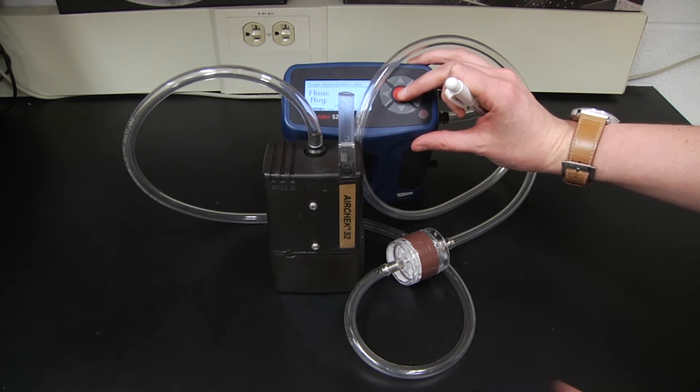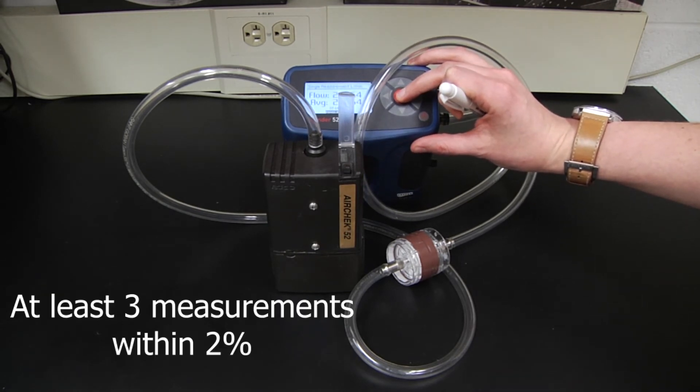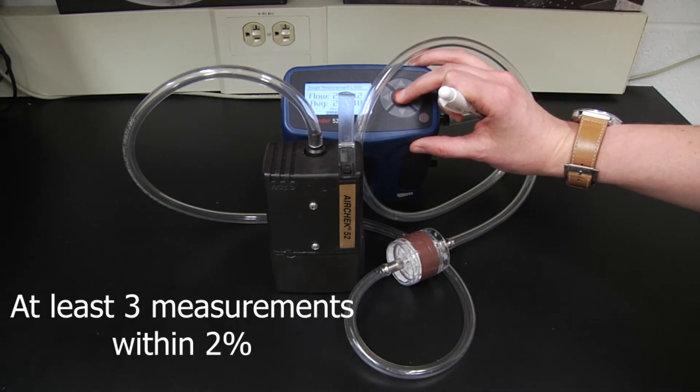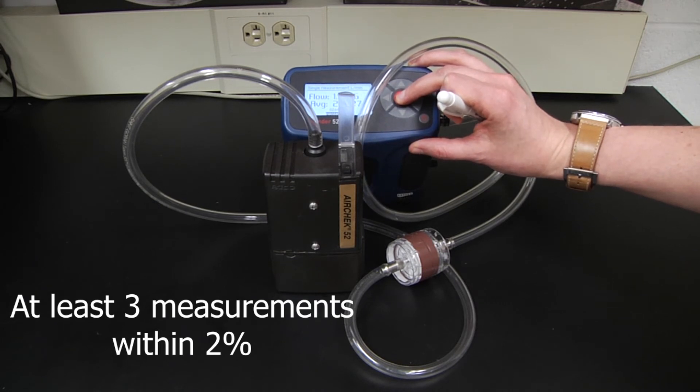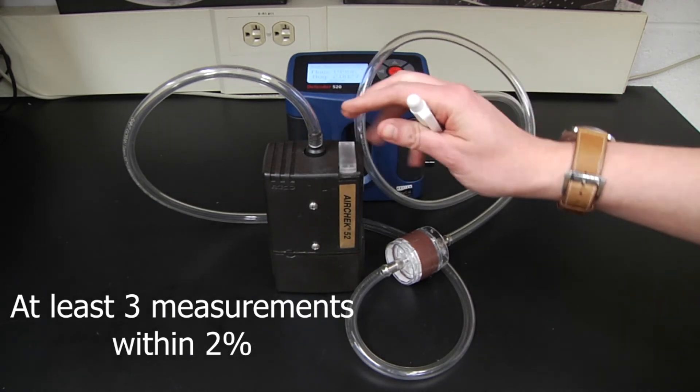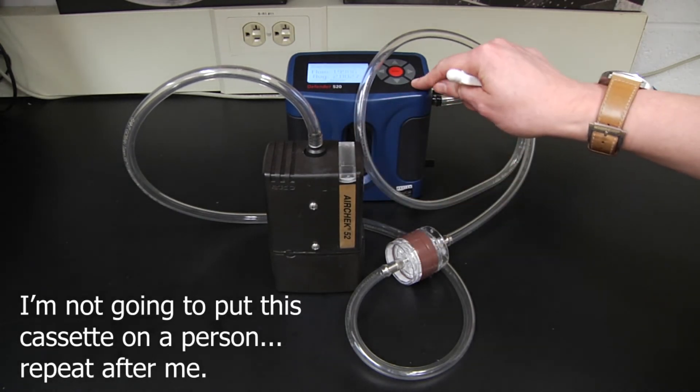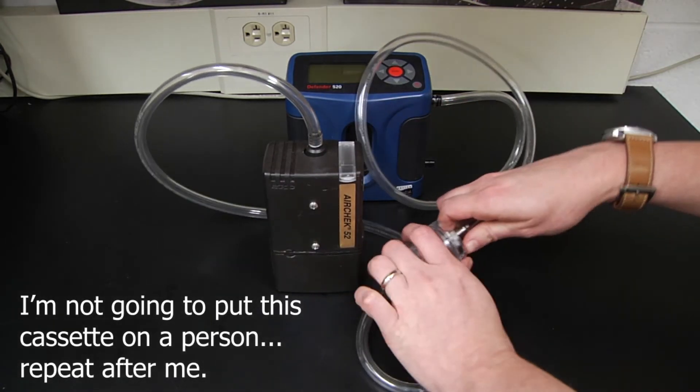Once you've adjusted the pump to your desired flow rate, perform at least three consecutive measurements that should be within 2% of each other. Average these measurements and turn off your pump. Before sampling, be sure to attach fresh media to your pump.